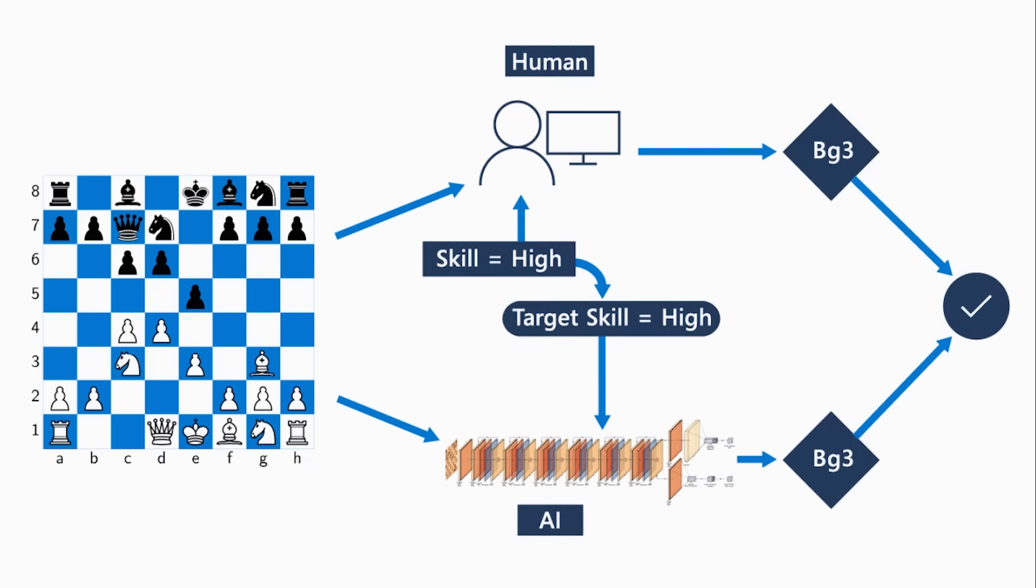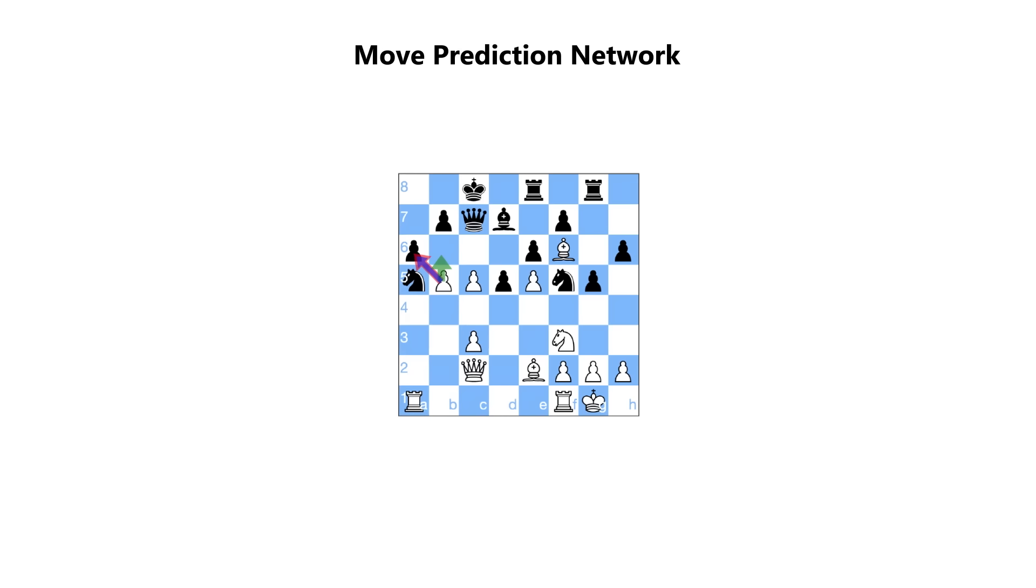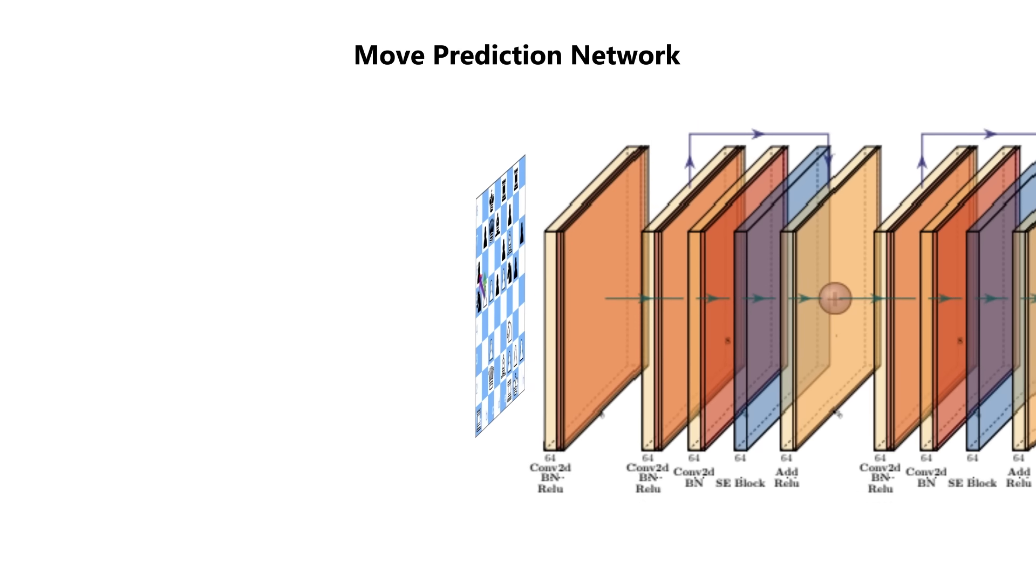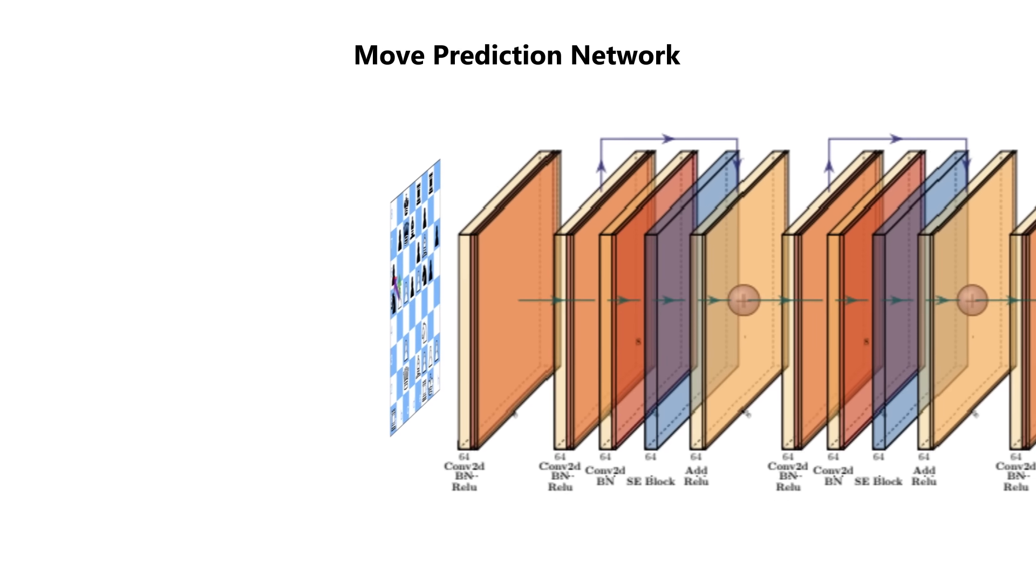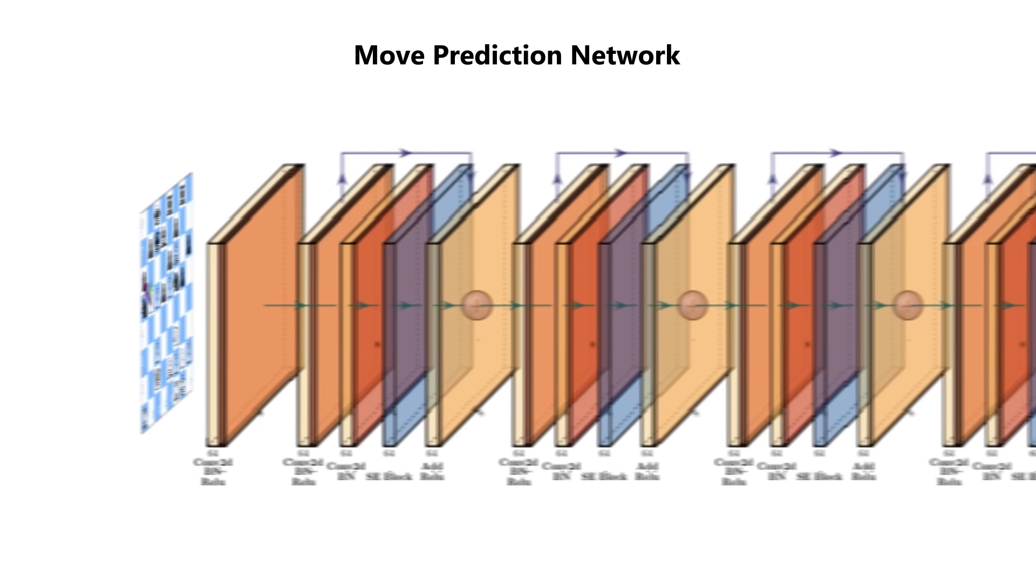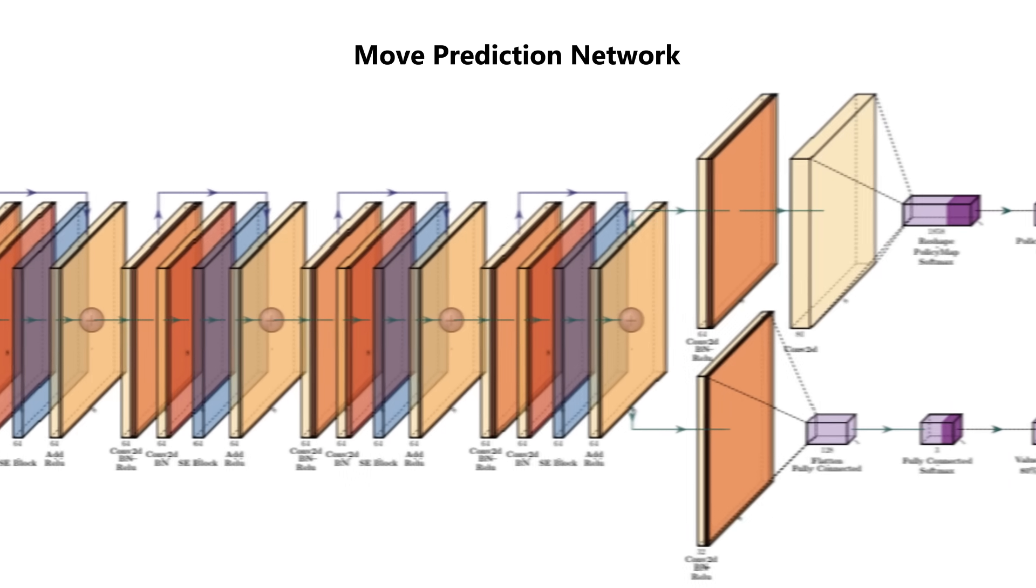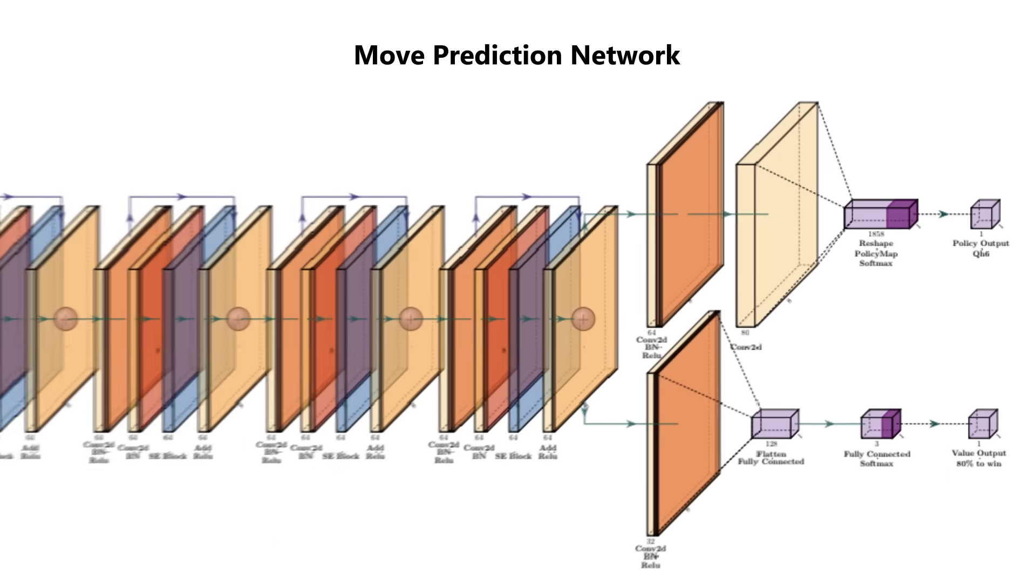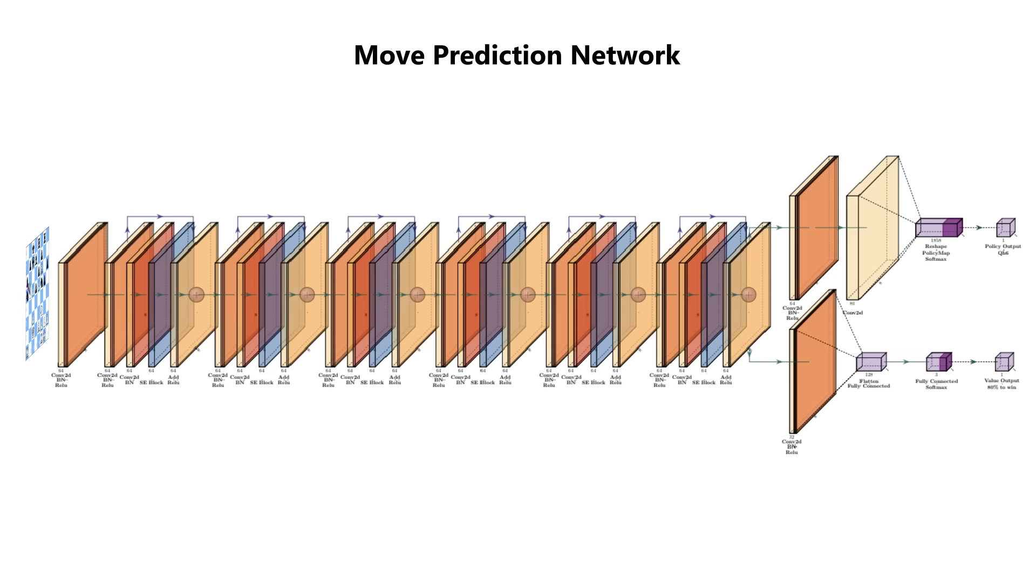Given a position on the board, we look at a human of a particular skill level and we ask the question, what move would they make? And the way we developed Maya was essentially by taking the deep reinforcement learning neural networks that are out there that have been currently used to predict moves and retraining them to instead try to predict what a human player would do.